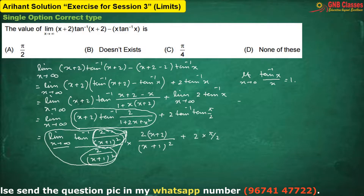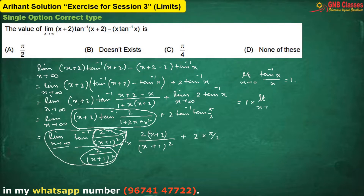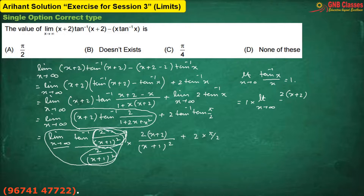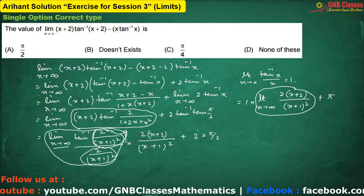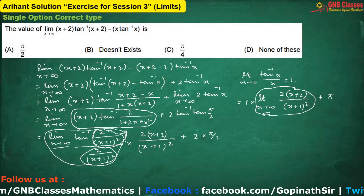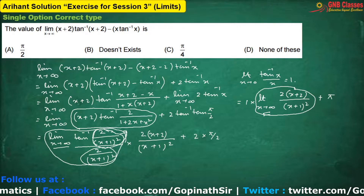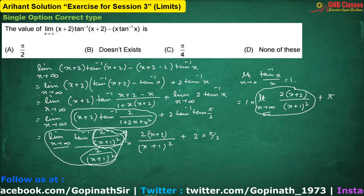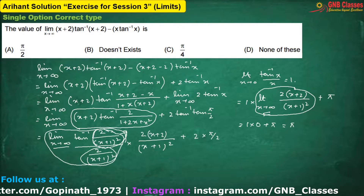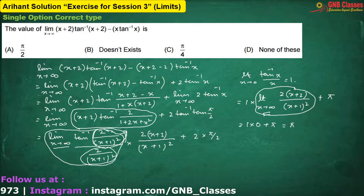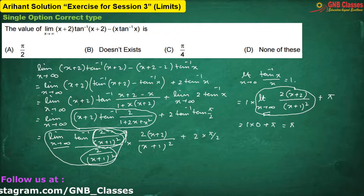So this is coming to one into the expression, which is 2x plus 2. Now the power of x in the denominator is higher than the power of x in the numerator. As x is approaching towards infinity and the power of the denominator is more than the power of the numerator, the value of this limit will be nothing but zero. So it will be π only. No option is matching, so option D is correct.